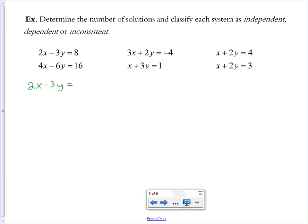So I'll take my first equation, get y by itself, 2/3x minus 8/3, and take the second equation, get y by itself.